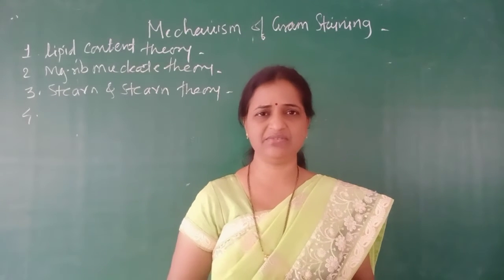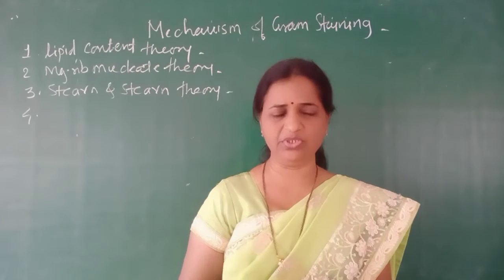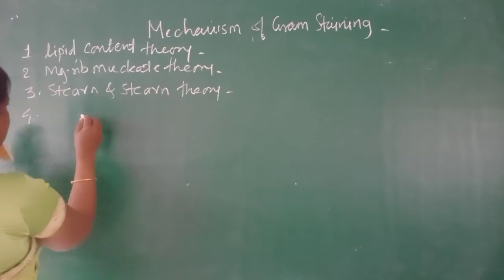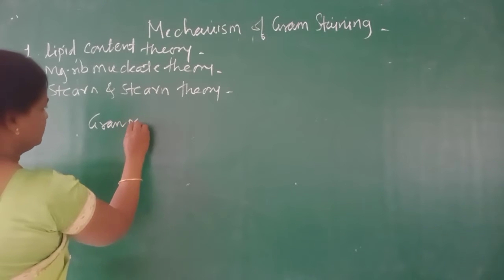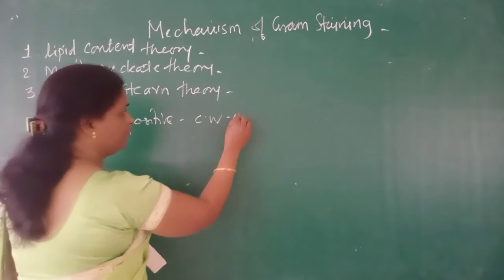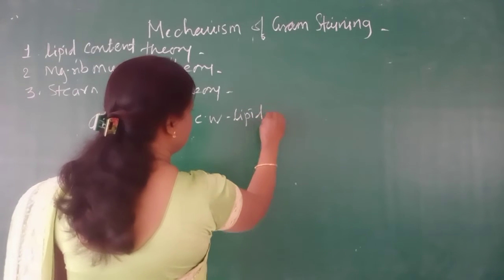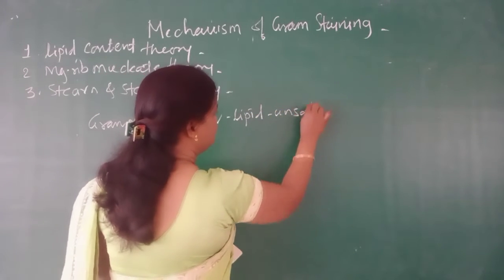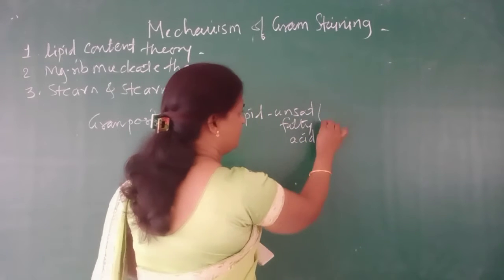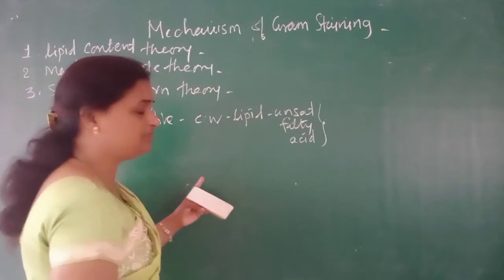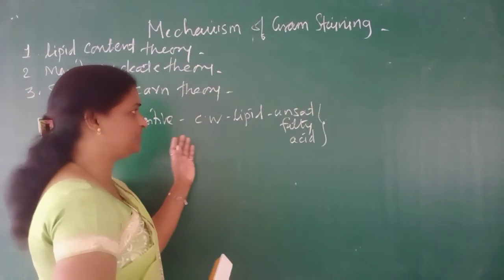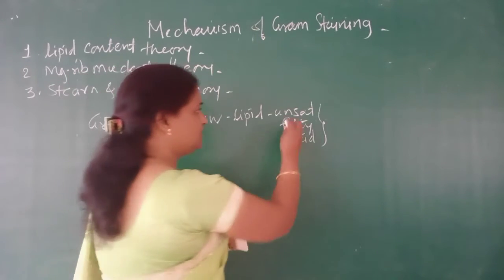In Gram positive cell walls, the lipids consist of a large number of unsaturated fatty acids. So a large number of unsaturated lipids or fatty acids are present in Gram positive cells. In Gram negative cells, there are fewer unsaturated fatty acids.